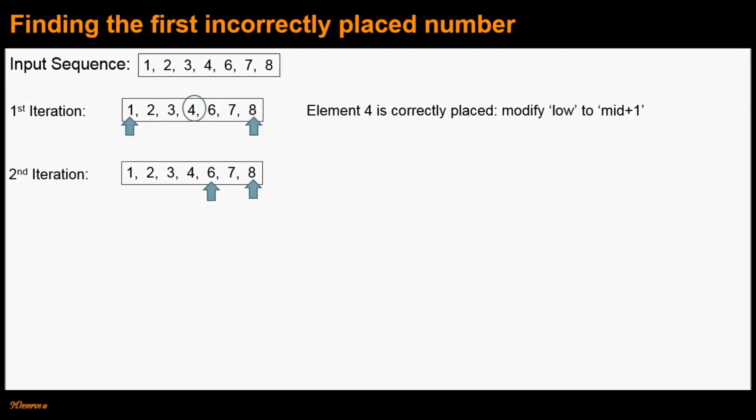In the second iteration, the mid element would be element 7. We check if element 7 is correctly placed — it is not. Therefore, the first incorrectly placed number could either be element 7 or it could be in the left half of element 7. To continue searching the left half of element 7 including element 7, we modify the high index to the mid index.